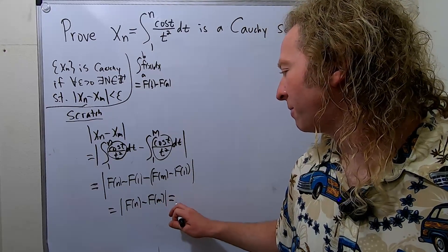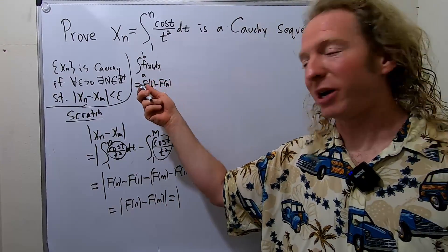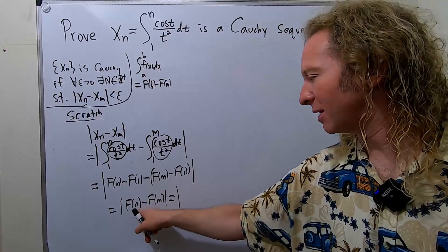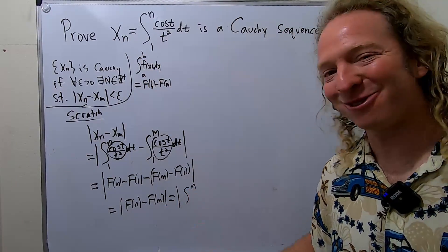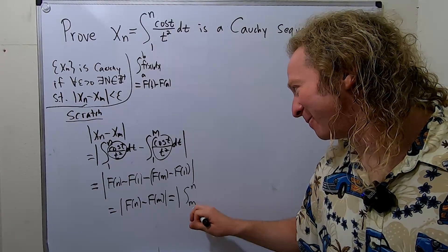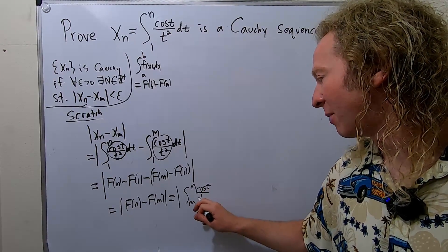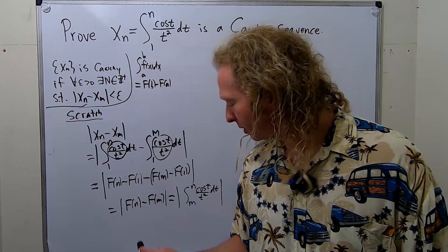Now using the fundamental theorem of calculus again, we can go backwards, right? f(b) minus f(a), well, that means the b goes up top, so that means the n goes up top. Oh, that's cool. And the m goes in the bottom. And this is cos(t) over t^2. Yeah, we should be able to figure this out. It's good.